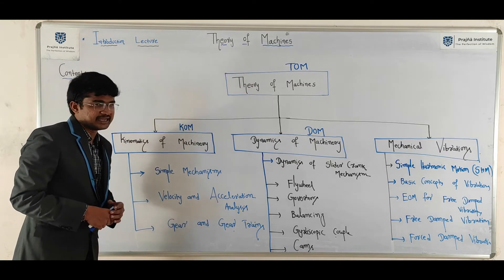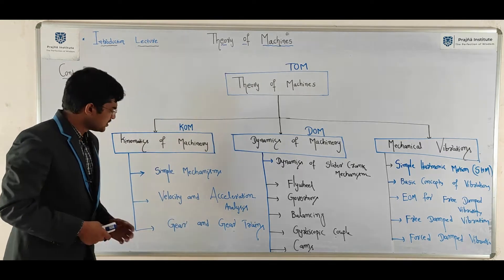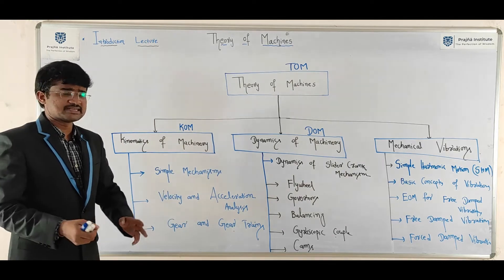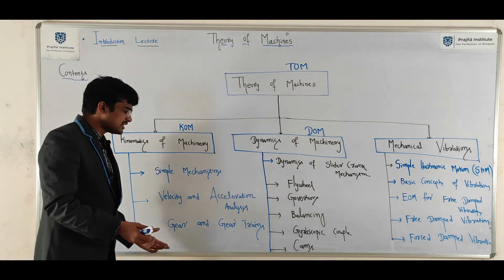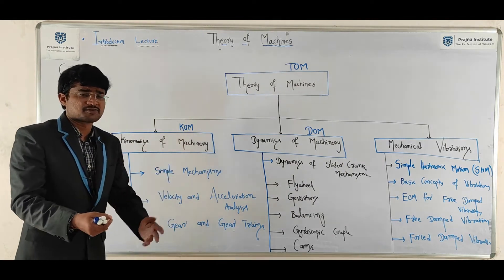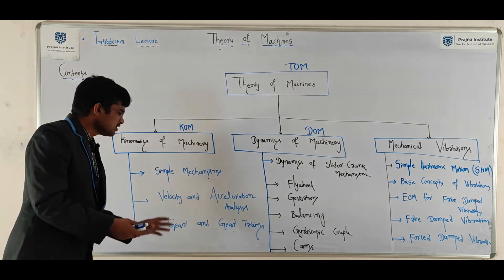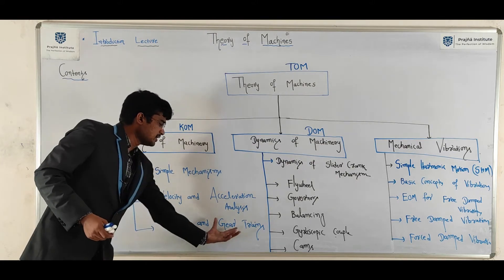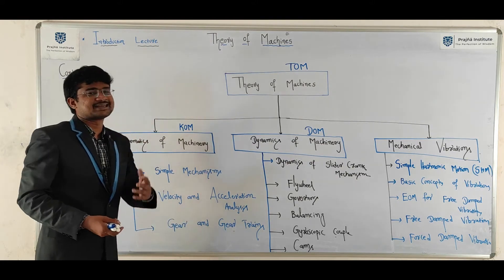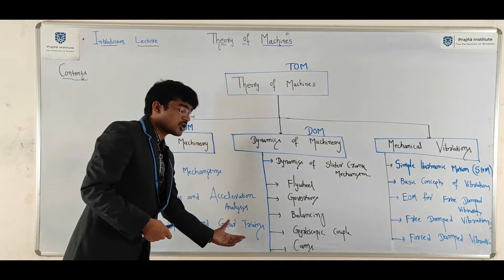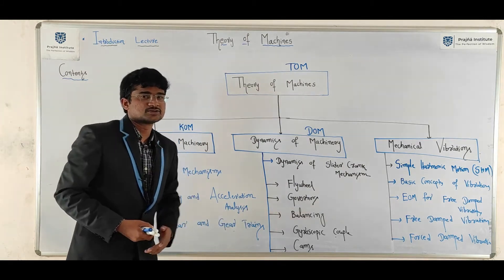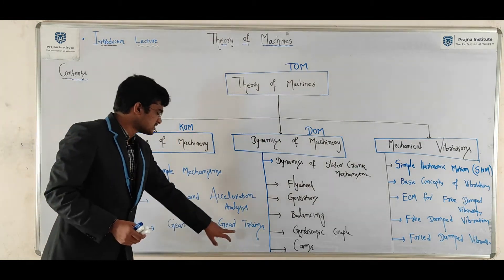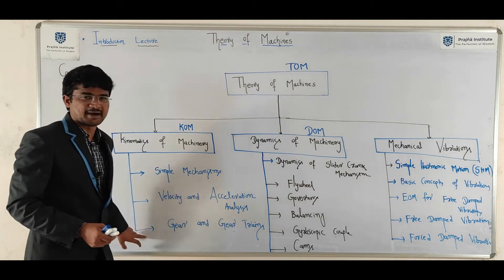Gears and gear trains — it is a very simple topic. Classification of gears, length of contact, path of contact will be discussed. The box method for gear trains will be used to find the velocity of a gear.